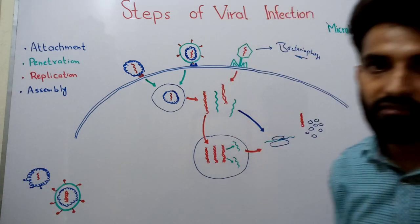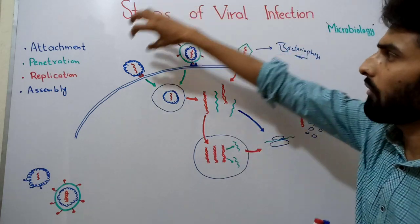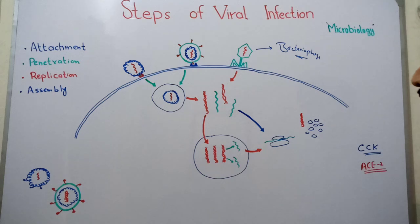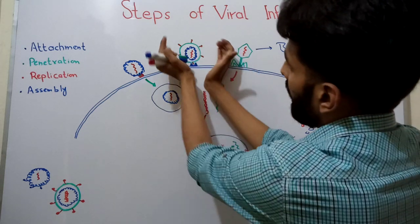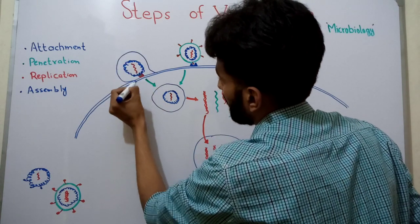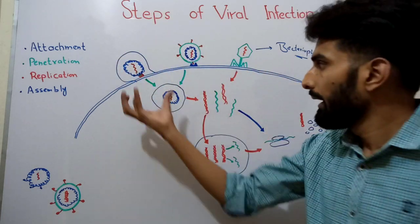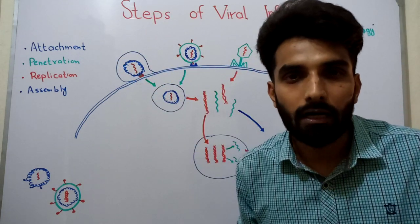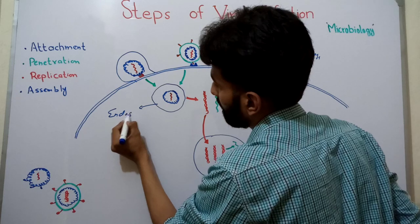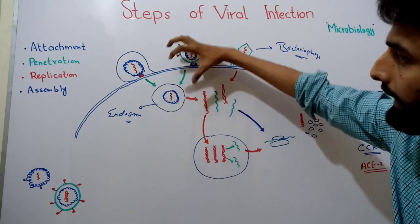In the case of animal cells, when an enveloped or naked virus attaches to the host cell via its glycoproteins, endocytosis takes place. The entire capsid along with the genome enters the host cell, forming a structure called an endosome. Enveloped viruses can also fuse directly with the cell membrane to enter the cell.